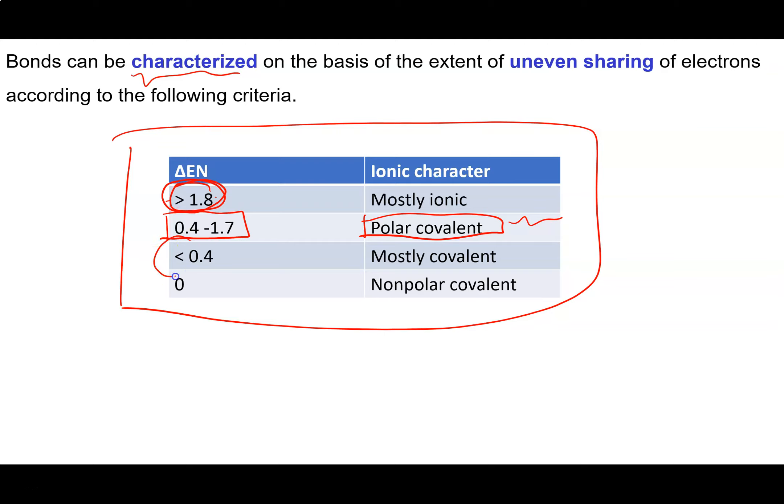When we have a difference in electronegativity of less than 0.4 then the uneven sharing of electrons really doesn't manifest in any obvious way as far as the chemical properties are concerned. So for us what we're really saying is greater than or equal to a 0.4 difference in electronegativity and then that's going to be a polar or ionic bond.